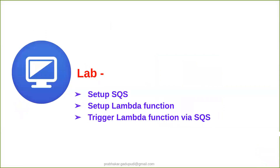Let's go to the lab. Inside the lab, I'm going to set up a queue, set up a Lambda function, and trigger that Lambda function with the help of SQS — this is a basic demo. I already covered SNS, that's Simple Notification Service, from which we can also trigger the Lambda function. I'll cover in another session when to use SNS versus SQS. Simple Notification Service is more for the push mechanism; Simple Queue Service is more for the pull mechanism — from SNS we push messages to subscribers, from SQS we pull messages from the queue.